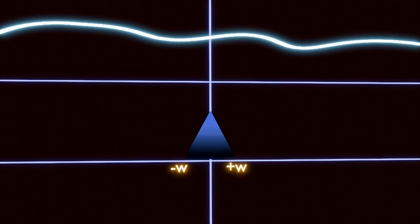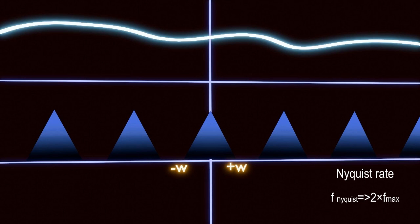Let's sample the channel with Nyquist Rate, meaning the sampling frequency is at least equal to twice of the message bandwidth. From the graph, it means this frequency gap is at least 2W.